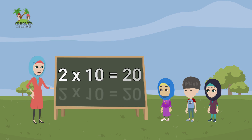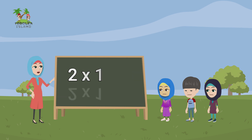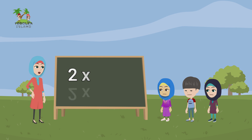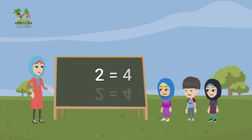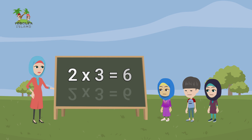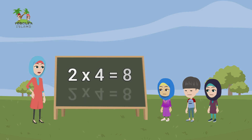When you multiply 2 by 1, the result is 2. Multiplying 2 by 2 gives you 4. The product of 2 multiplied by 3 is 6. When you multiply 2 by 4, you get 8.